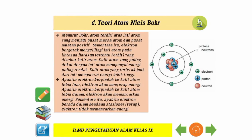Teori atom Niels Bohr: Menurut Bohr, atom terdiri atas inti atom yang menjadi pusat massa atom dan pusat bermuatan positif. Sementara itu, elektron bergerak mengelilingi inti atom pada lintasan-lintasan tertentu atau orbit yang disebut kulit atom. Kulit atom yang paling dekat dengan inti atom mempunyai energi paling rendah; kulit atom yang terletak jauh dari inti mempunyai energi lebih tinggi. Apabila elektron berpindah ke kulit atom lebih luar, elektron akan menyerap energi. Apabila elektron berpindah ke kulit atom lebih dalam, elektron akan memancarkan energi. Apabila elektron berada dalam keadaan stasioner atau tetap, elektron tidak memancarkan energi.